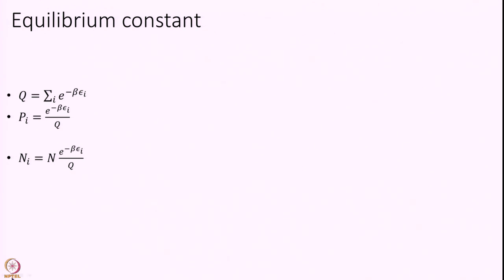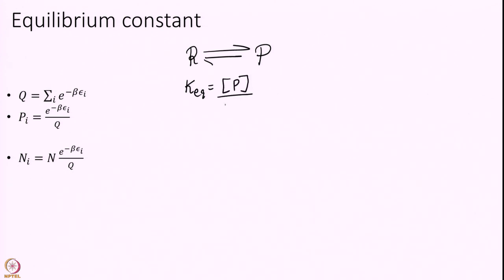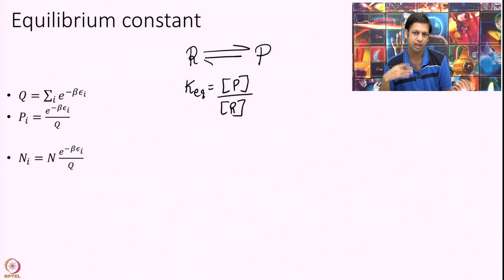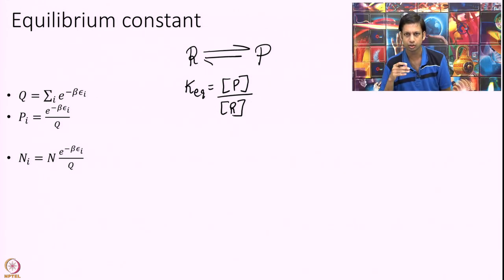So, what we are really trying to calculate — let us imagine I have a reaction with some reactant and some product and I want to calculate the equilibrium constant. That will be given by the concentration of products divided by concentration of reactants. Of course, if you have stoichiometric coefficients you can put those in here as well. The question is: how do I relate this to partition functions?